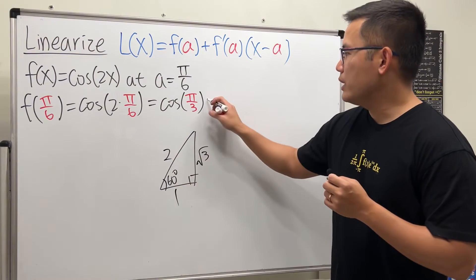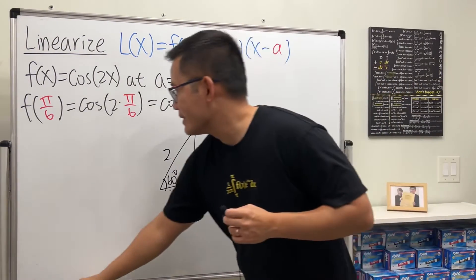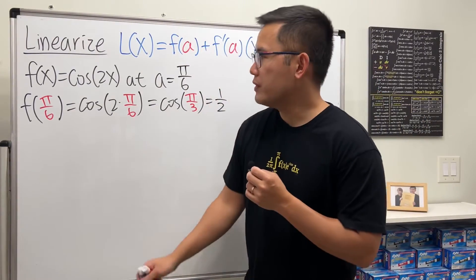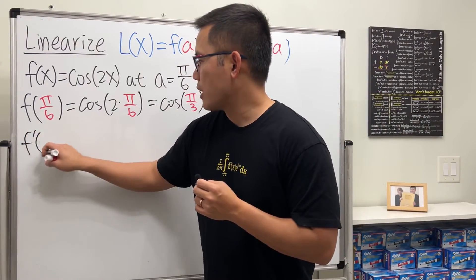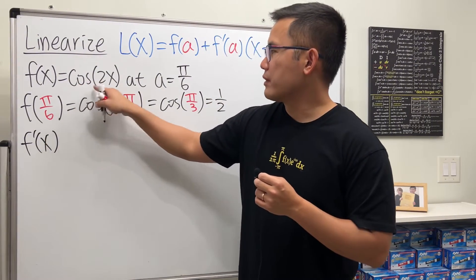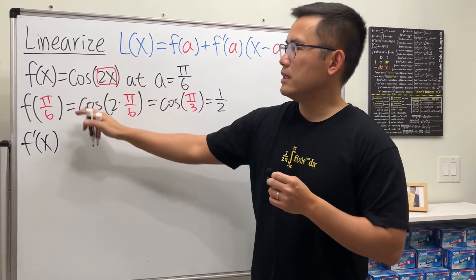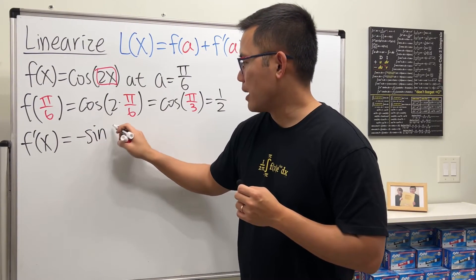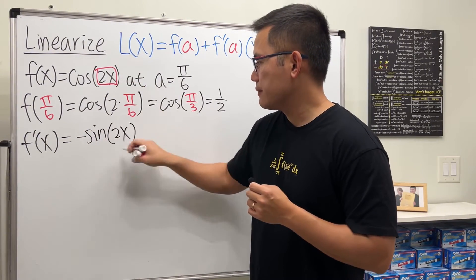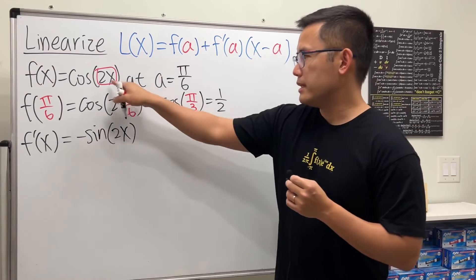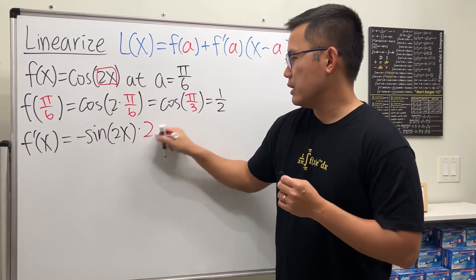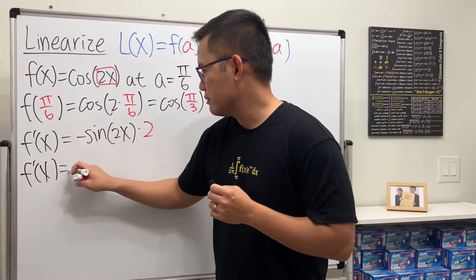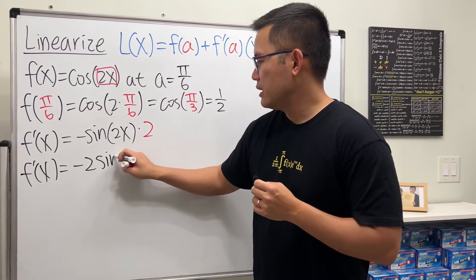Pretty nice answer. Now take the derivative. The derivative of cosine of a box is negative sine of that box, so f prime of x equals negative sine of 2x, then multiply by the derivative of the inside 2x, which is 2. So f prime of x is negative 2 sine of 2x.